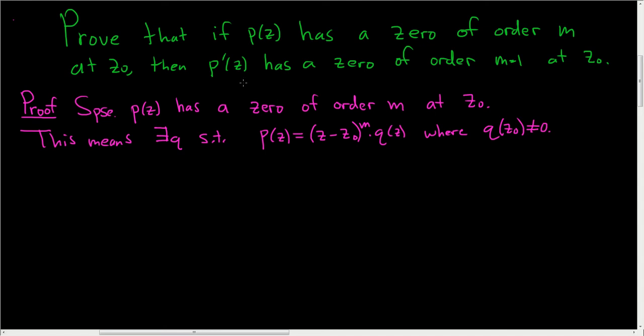Now we have to prove that the derivative has a zero of order m minus 1. So the natural thing to do now is look at the derivative of p. So then let's look at the derivative of p. So p prime of z.